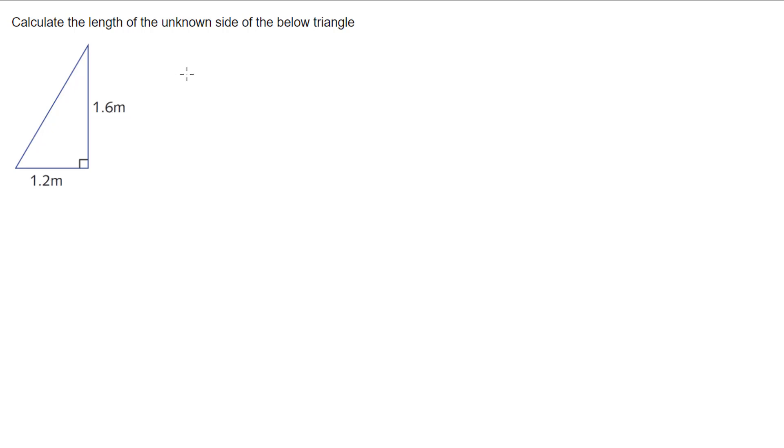Pythagoras' theorem states that if I take my two short sides, which are typically labelled A and B, and if I square them, so if I have A squared and if I have B squared, and if I add those two together, then that will give me the length of the third side, which we usually call C, squared.